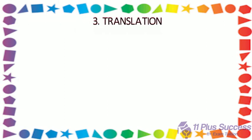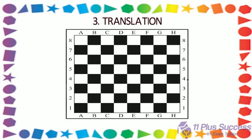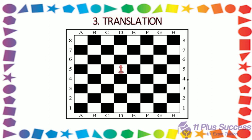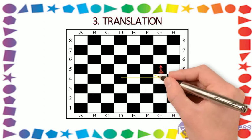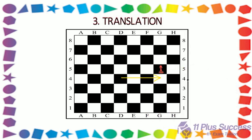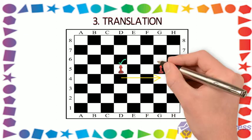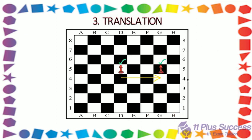3. Translation. To translate a shape, you can move it up or down or from side to side, but you cannot change its appearance in any other way. In other words, translating an image is like sliding an image. When a shape is translated, each of the vertices must be moved in exactly the same way.